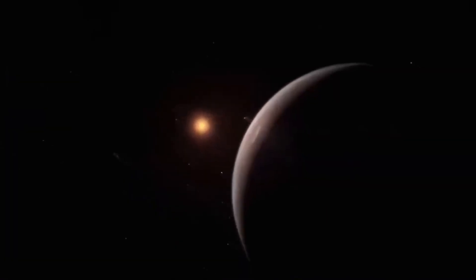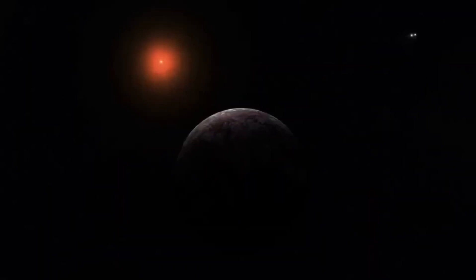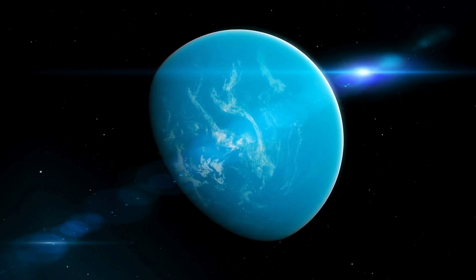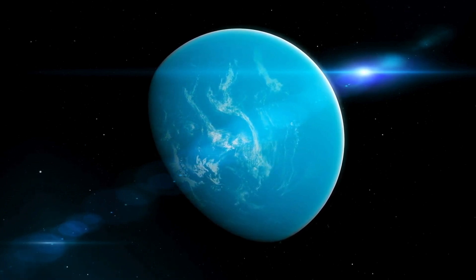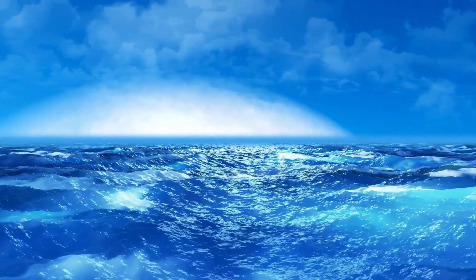But what if the planet has an atmosphere that is not conducive to life? The presence of an atmosphere does not guarantee the presence of life. Proxima b could be like Venus, with a thick atmosphere that is 90 times denser than Earth's and extreme heat that would make it impossible for life to exist.